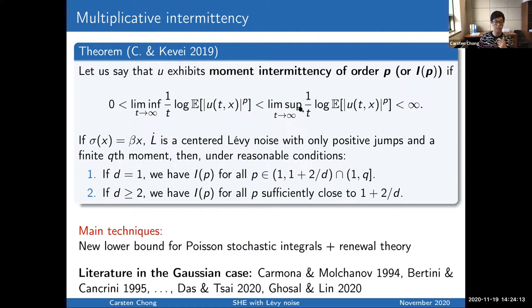The type of results that we can get are the following. So if you have multiplicative noise and your noise is centered Lévy with a finite Qth moment, then under reasonable conditions, you can show that in dimension one, you have intermittency for all orders P that are reasonable. And in dimensions two or greater, in that first paper, we could show that you have intermittency for P sufficiently close to one plus two over D. This is a bound that you cannot cross because the solution will not have finite moments of that order. So that's a natural bound on the range of Ps that you can study. The main techniques use moment lower bounds for Poisson stochastic integrals combined with renewal theory.